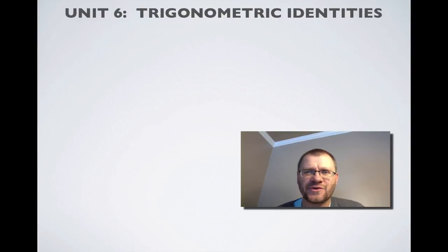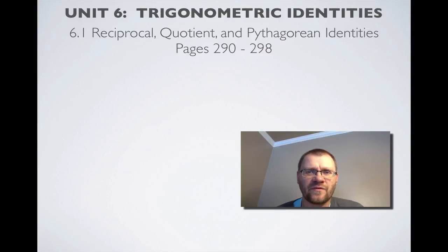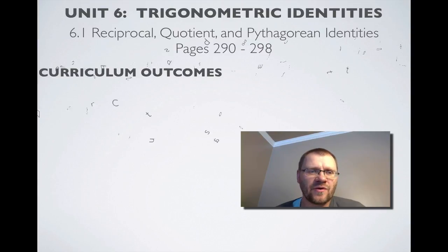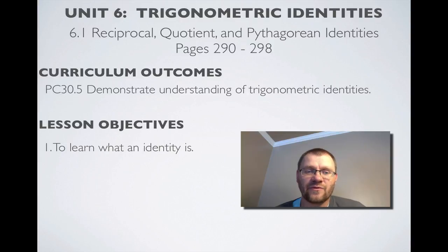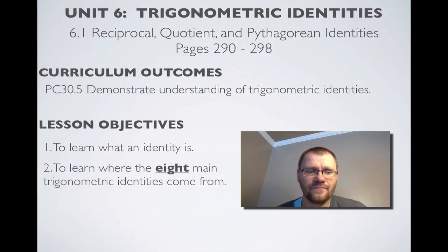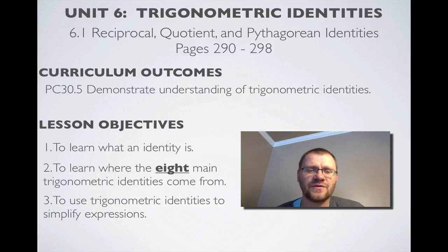Unit 6 is talking about trigonometric identities, and 6.1 is focusing on eight fundamental identities, which are the reciprocal, quotient, and Pythagorean identities, found on pages 290 to 298 in your text. Our curriculum outcome is 30.5, where we need to demonstrate understanding of trigonometric identities. Our lesson objectives today are first to learn what an identity is, to learn where the eight main identities come from, and to use trigonometric identities to help simplify expressions.